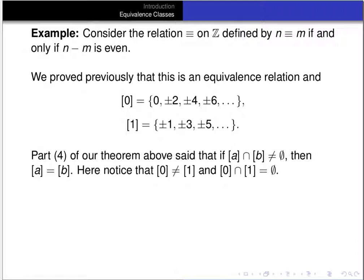Finally, part 4 says that if the intersection of two equivalence classes is non-empty, then they're equal. Notice the contrapositive holds here: the equivalence class of 0 is not equal to the equivalence class of 1, so their intersection is empty. That's it for this video — thanks for listening.